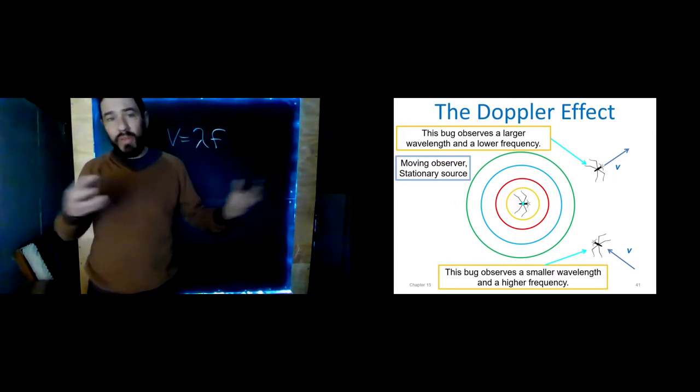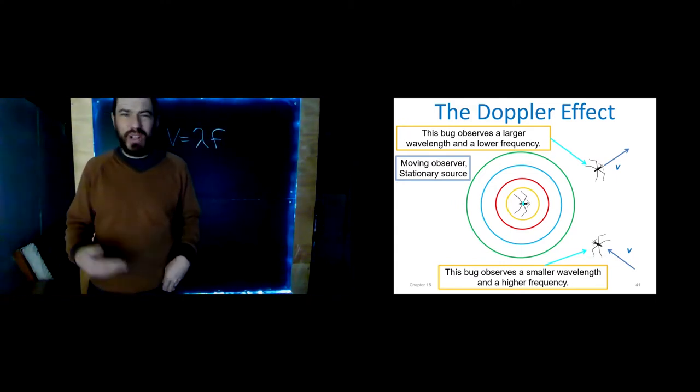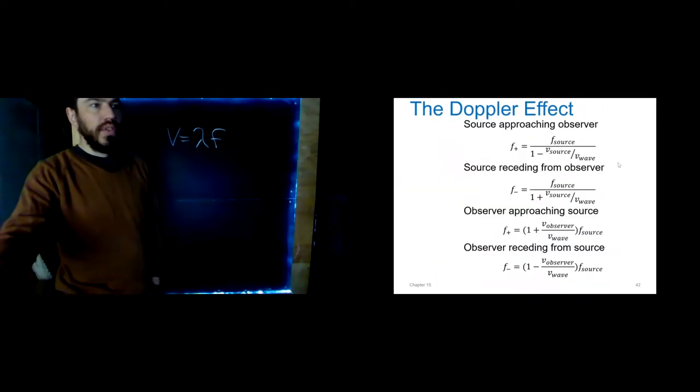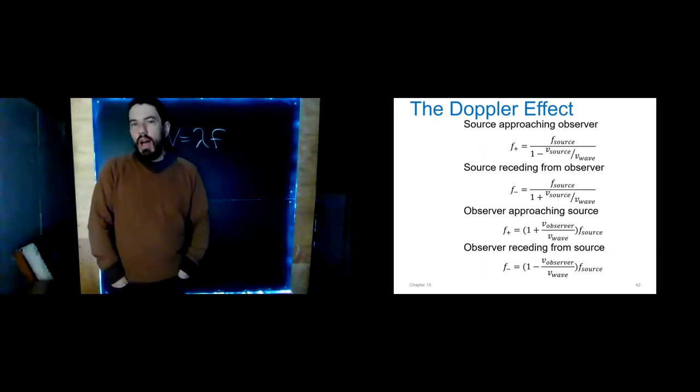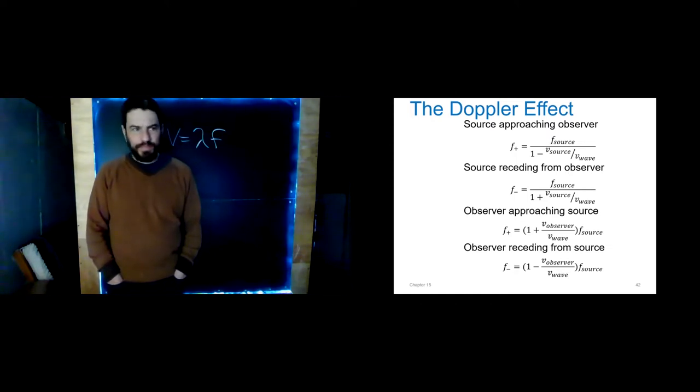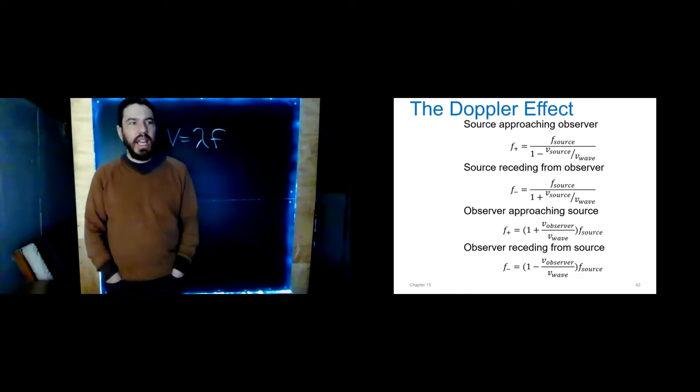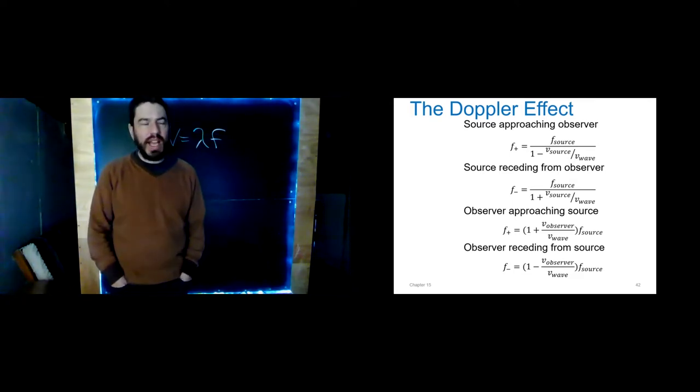So whether we have the source moving relative to the observer or the observer moving relative to the source, we get the Doppler effect. Now, of course, it happens if both of them are moving. That's just a more complicated case. We could deal with that here, but we just choose not to. So here's these equations. If you look online, there's different ways to organize these. In fact, some textbooks lump them all together. But this is, I like the way our textbook does it. It writes them as four separate equations.